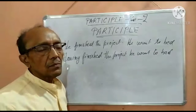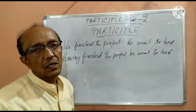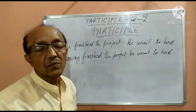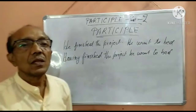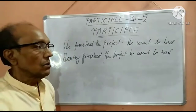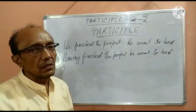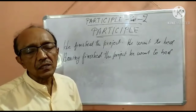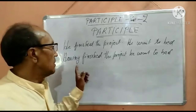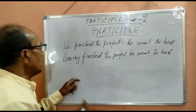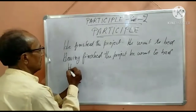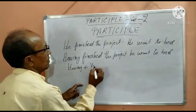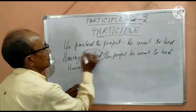You get questions regarding this in exams as well — in competitive examinations and in transformation of sentences. The main thing is: when one action has ended and then the second has started, we use 'having + V3 form of verb.' This is always V3.